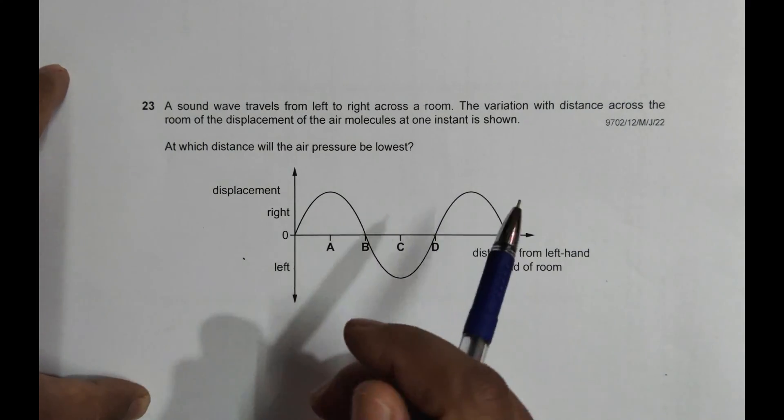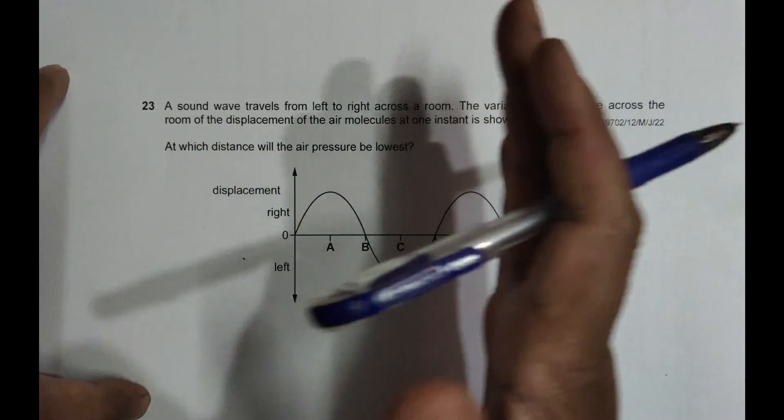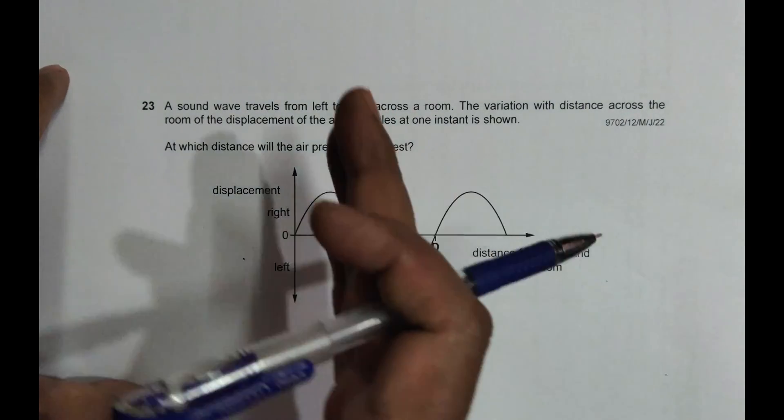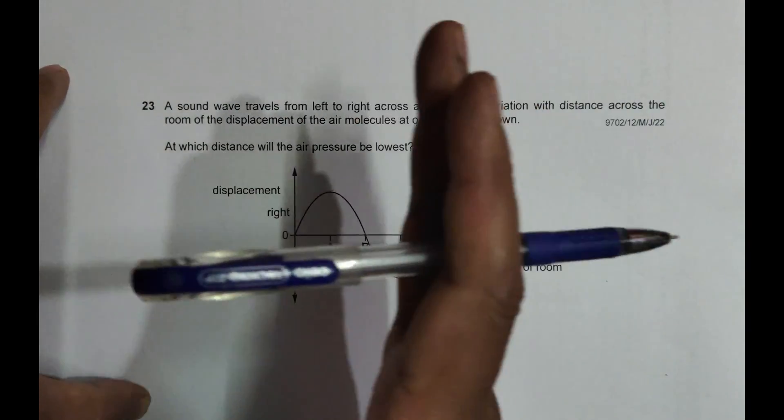So if it goes from here to here, they vibrate like this, they vibrate like this, not like this. So if the energy goes from here to here, they have to vibrate like this.